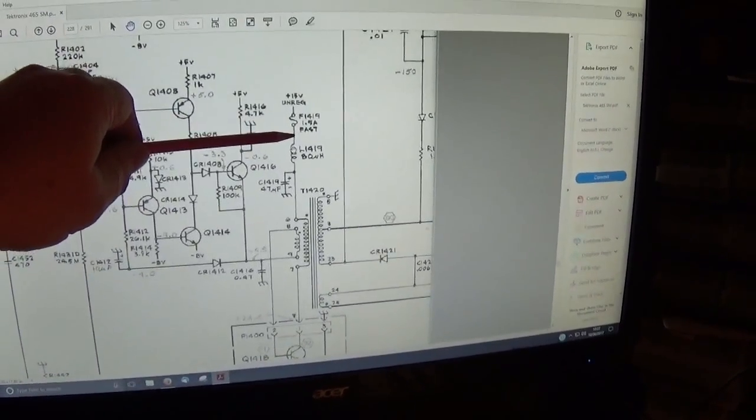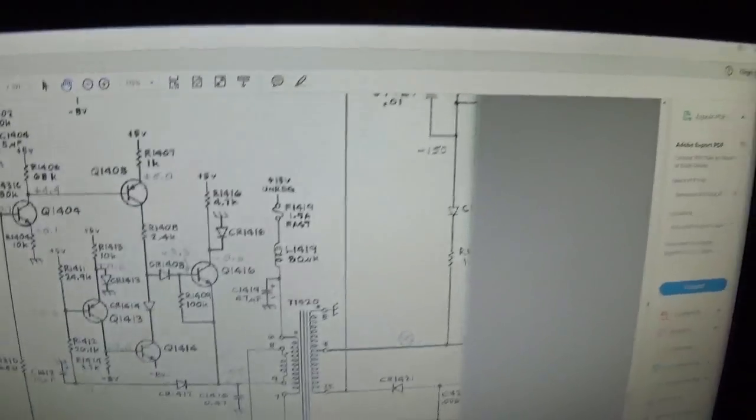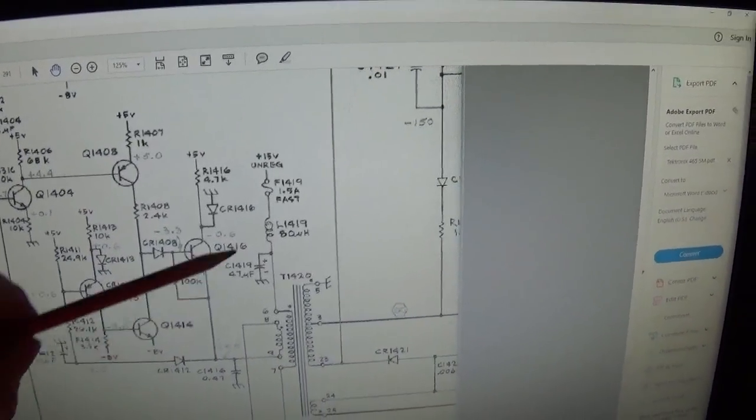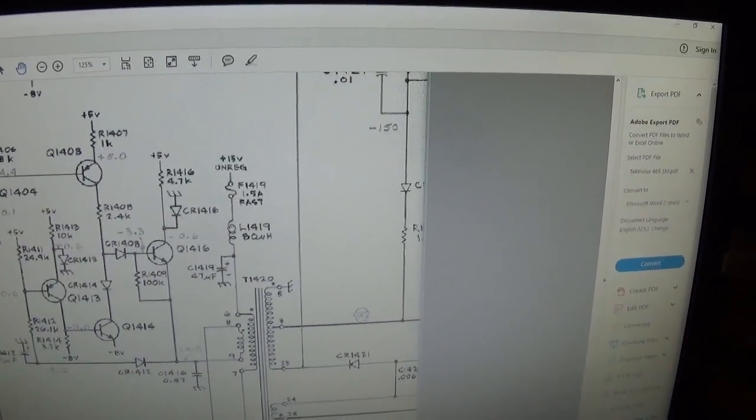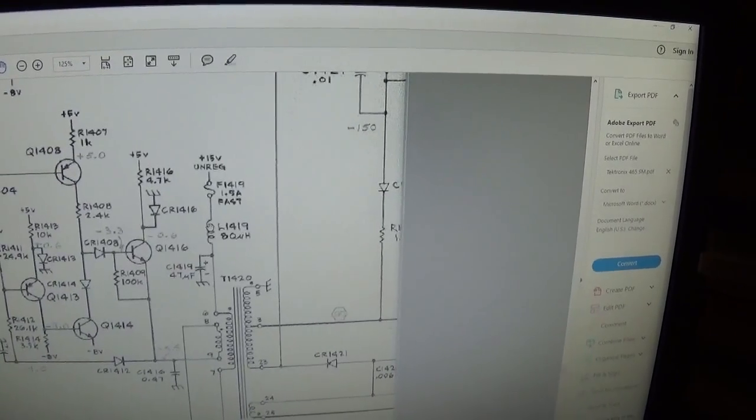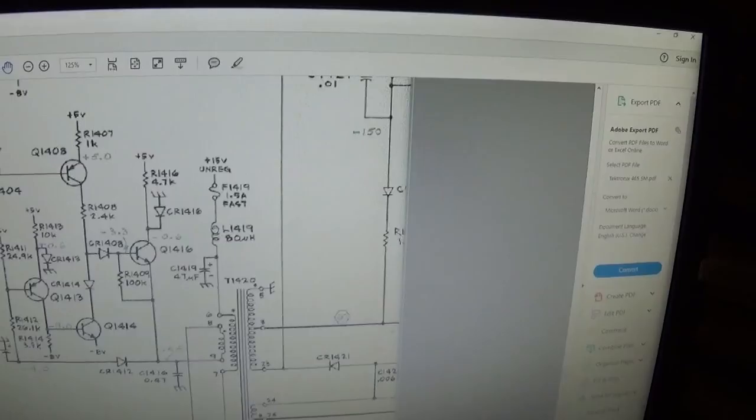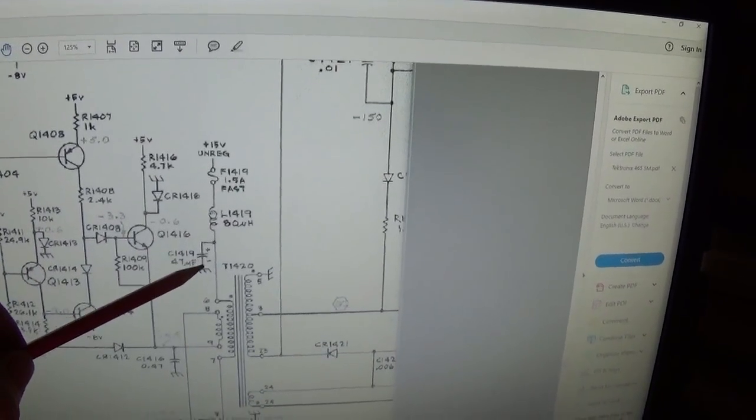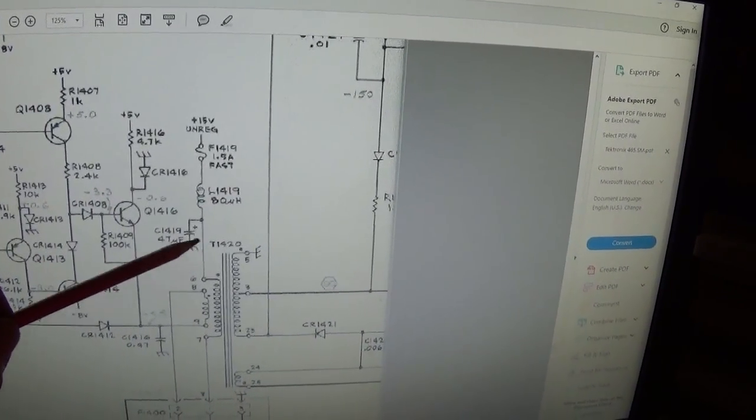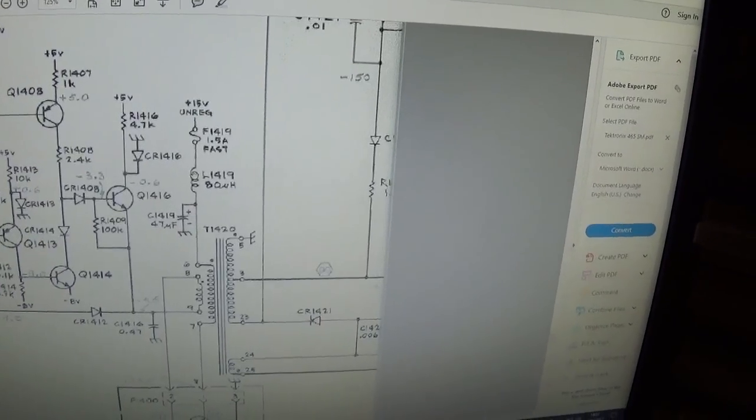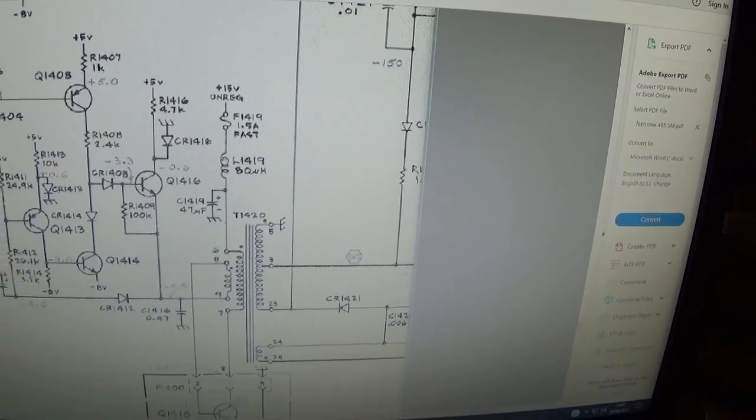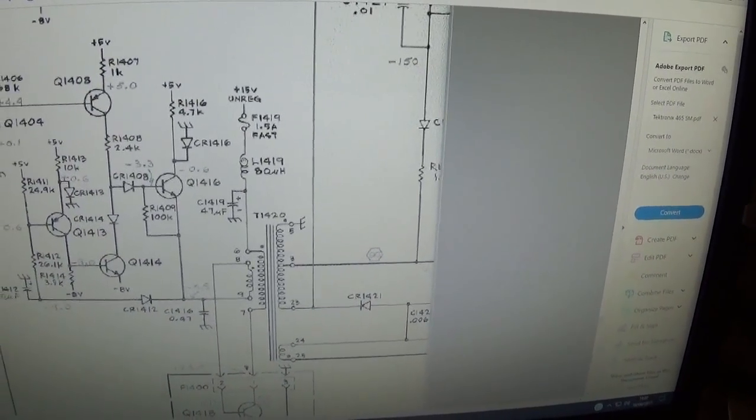The fuse had blown here, the 1.5 amp fast blow fuse, that's on top of the board. I then tested this electrolytic here, between ground and both of the pins and there was a very low resistance reading.